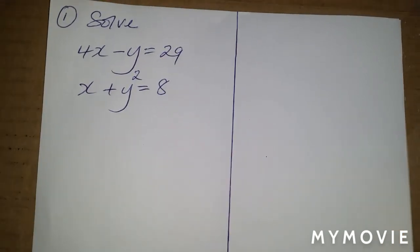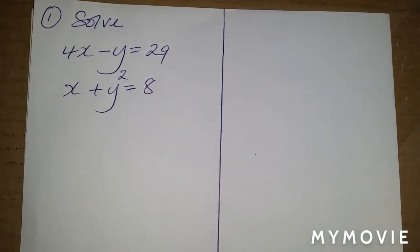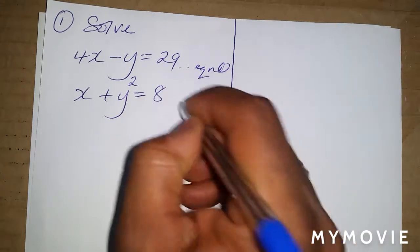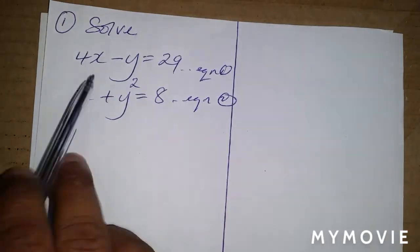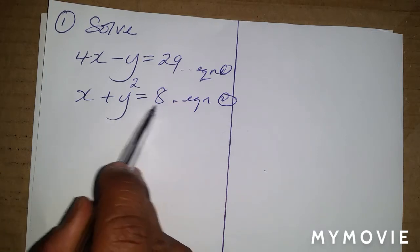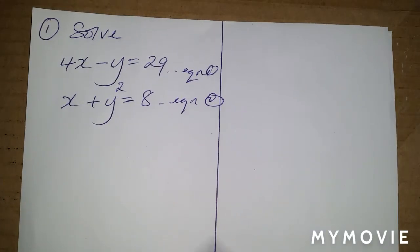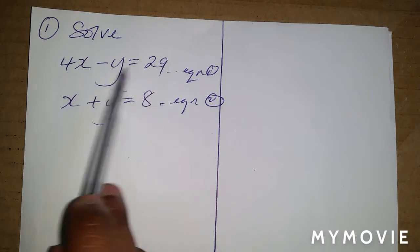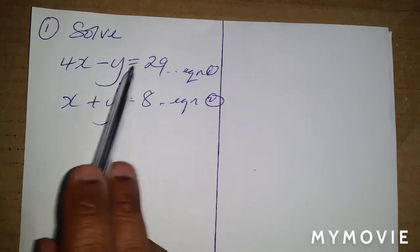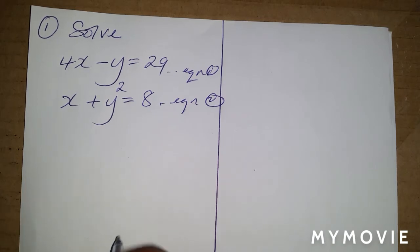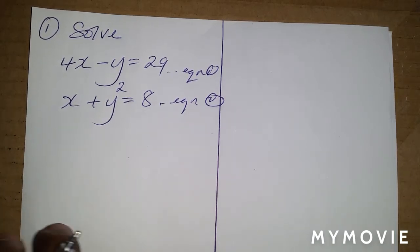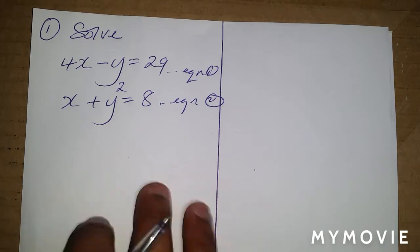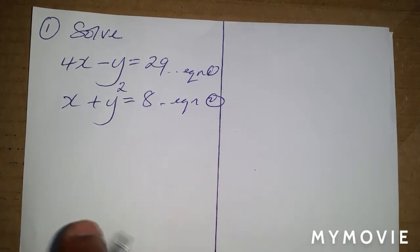Alright guys, here we are with question number one, which is going to be slightly longer. I want to point something out — I'm going to call this equation one and this equation two. Equation one is the linear equation and equation two is the non-linear equation. In a previous example I recommended using the linear equation to make one of the unknowns a subject. I'm going to show it can work the other way as well, so I want you to be versatile in how you approach a question.